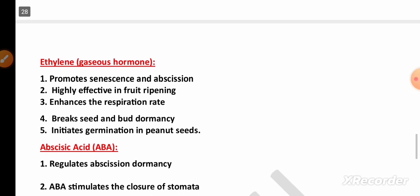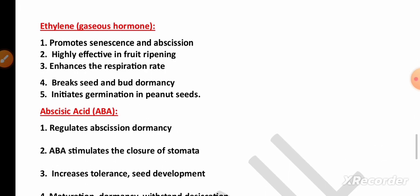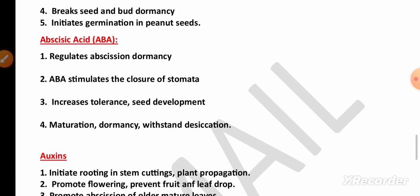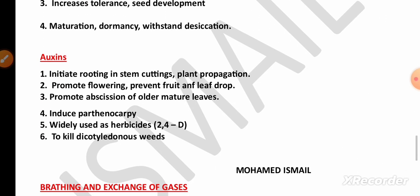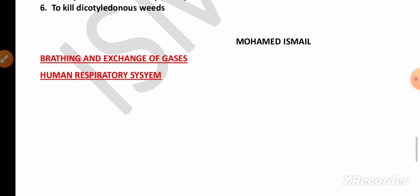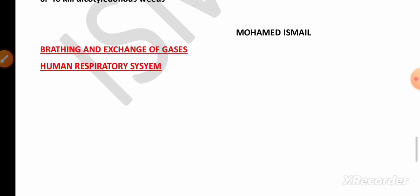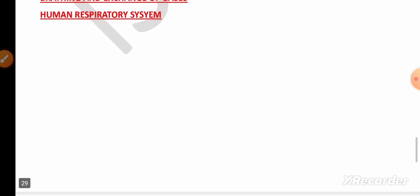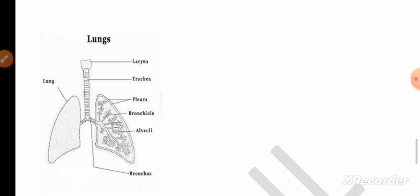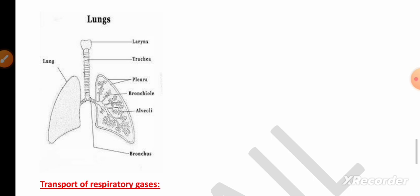In Plant Growth and Hormones, for three marks remember differentiation, de-differentiation, and re-differentiation definitions, and the roles of growth hormones like gibberellin, cytokinin, ethylene, abscisic acid, and auxin — these are very important to the exam.